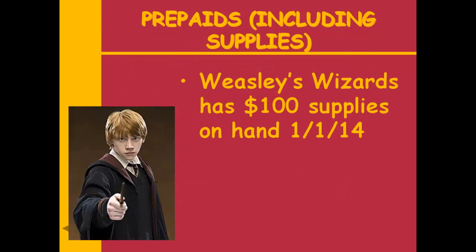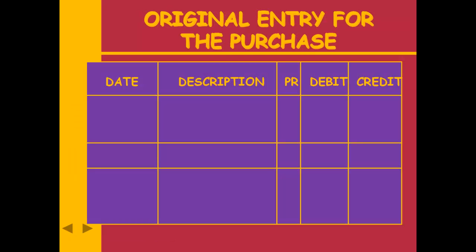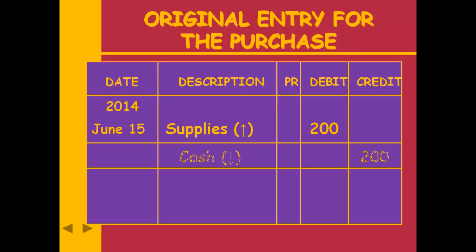We have $100 in supplies to start the year — left from the previous year. We buy $200 of supplies on June 15th. On June 15th when we buy the supplies and pay cash: supplies is an asset going up with a debit, and cash is an asset going down with a credit.